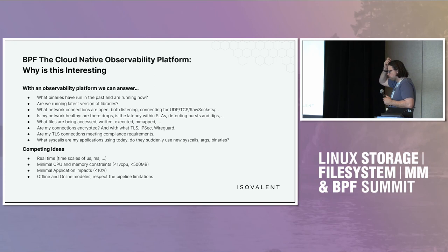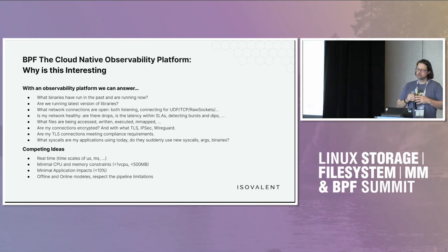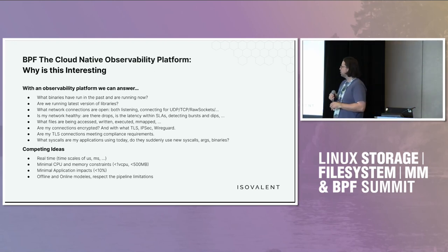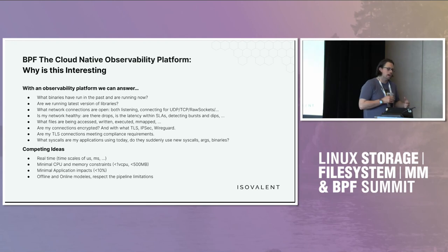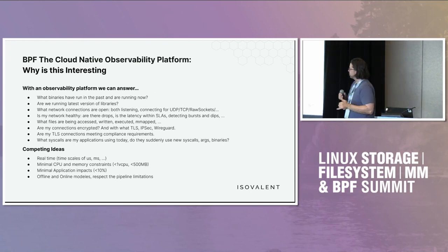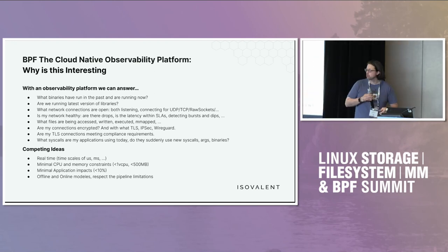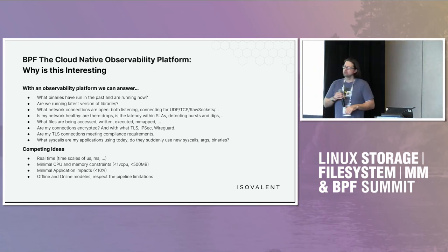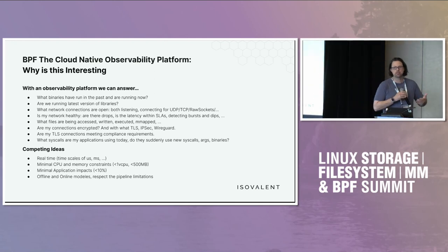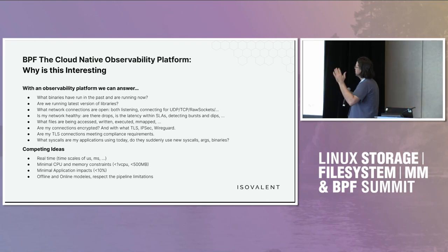The first question is why do people care and what do you want to do with Tetragon? One use case is knowing everything that's ever executed in your cluster — seeing every process in the system. You might want to know all the versions of libraries running across thousands of nodes. For example, if you have a patch for OpenSSL, how do you find anything running the old version? There's also networking statistics: latency, bytes, packets, histograms, P99 latencies. And file access.